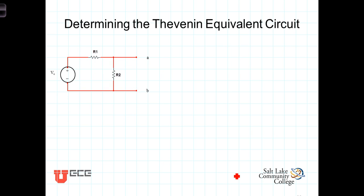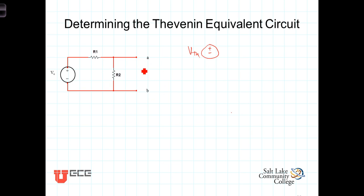The first thing we need to determine is the open circuit voltage. The Thevenin voltage in our Thevenin model is just the open circuit voltage. So in this case we need to know what the voltage between A and B is with nothing connecting A and B. As you look at this, you can see that the open circuit voltage is the voltage across R2.